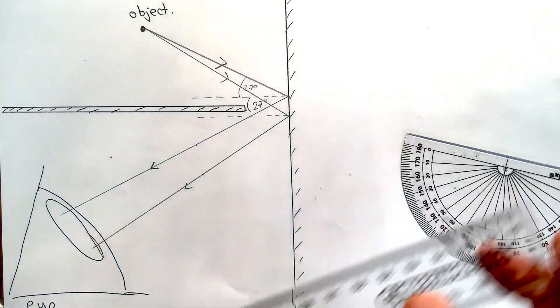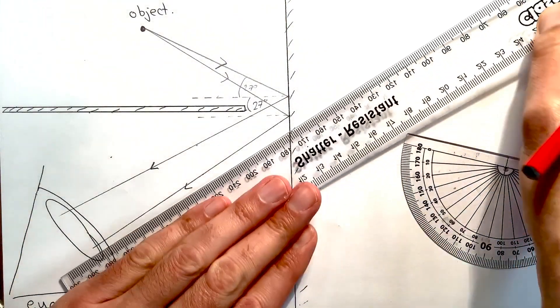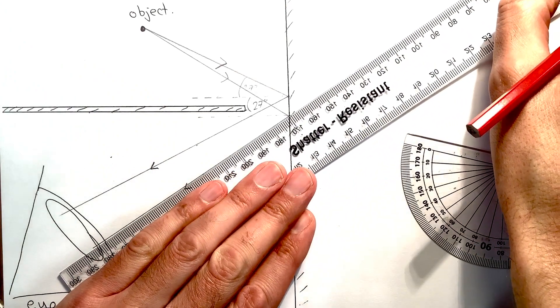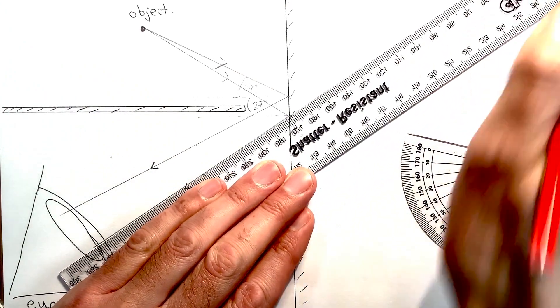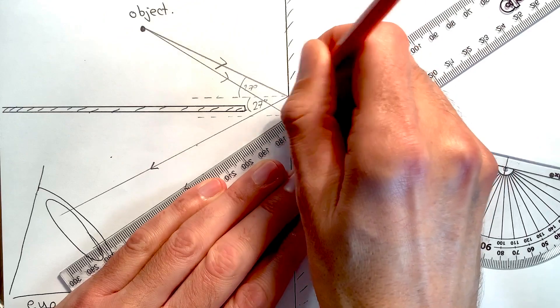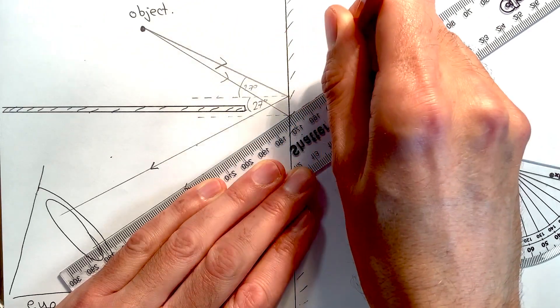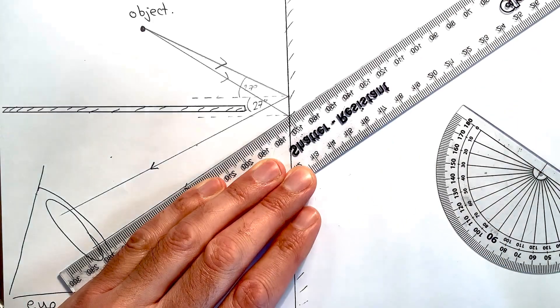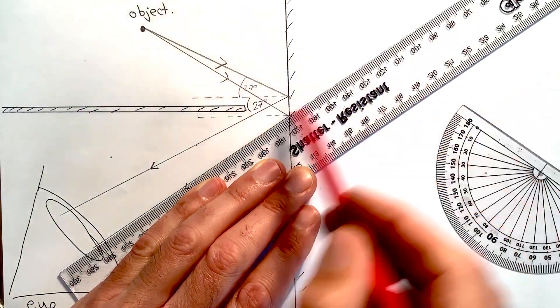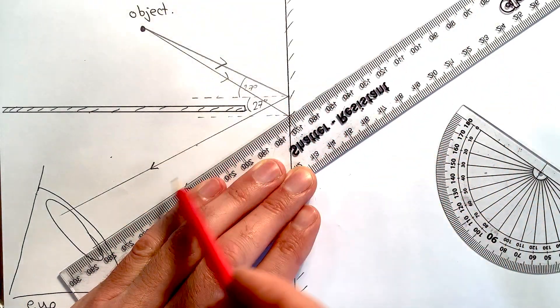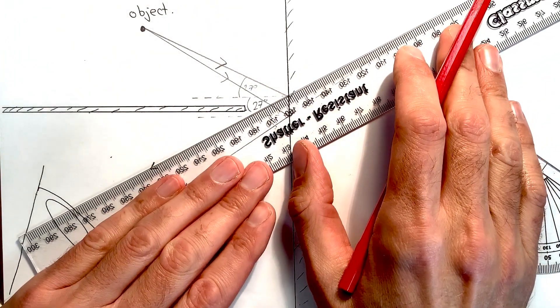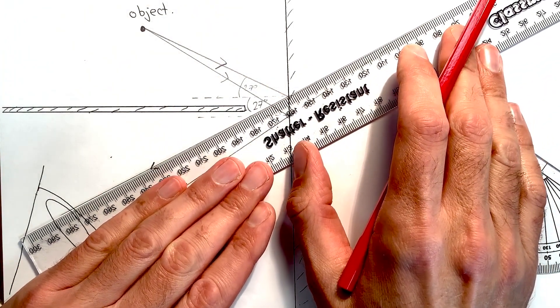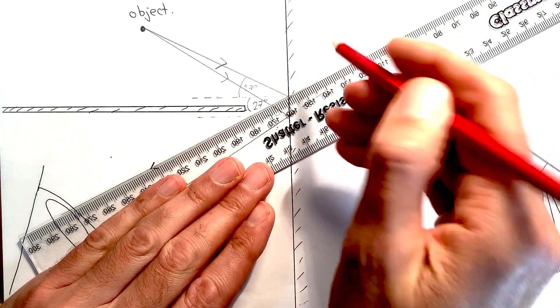At this point, I am ready to add in the virtual rays. So I need to line my ruler alongside the reflected ray and then draw in a dotted line going back to be my virtual ray, which is what your brain assumes the light has done—travelled in a straight line all the time. And do that again for the other reflected ray.